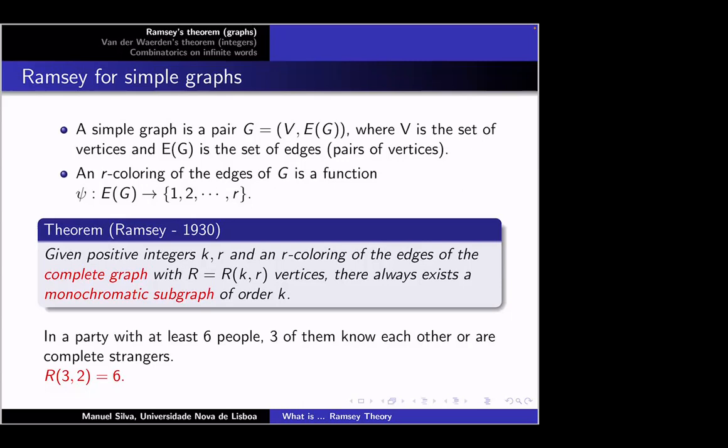The simplest case: in a party with six people, there must be three of them who know each other, or three who are complete strangers. This is equivalent to the two-color case, because each pair of persons either know each other or are strangers. To find three persons that know each other or are complete strangers, we need six vertices. Of course, if we want to find four persons who know each other or are complete strangers, those numbers should be much larger.